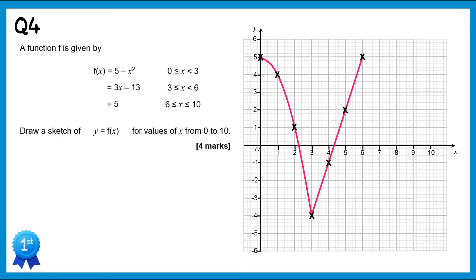The final section is where f(x) equals 5 — a horizontal line through 5 on the y-axis, but only for x values from 6 to 10. So we plot points (7, 5), (8, 5), (9, 5), and (10, 5), connect them up, and the function is completed.